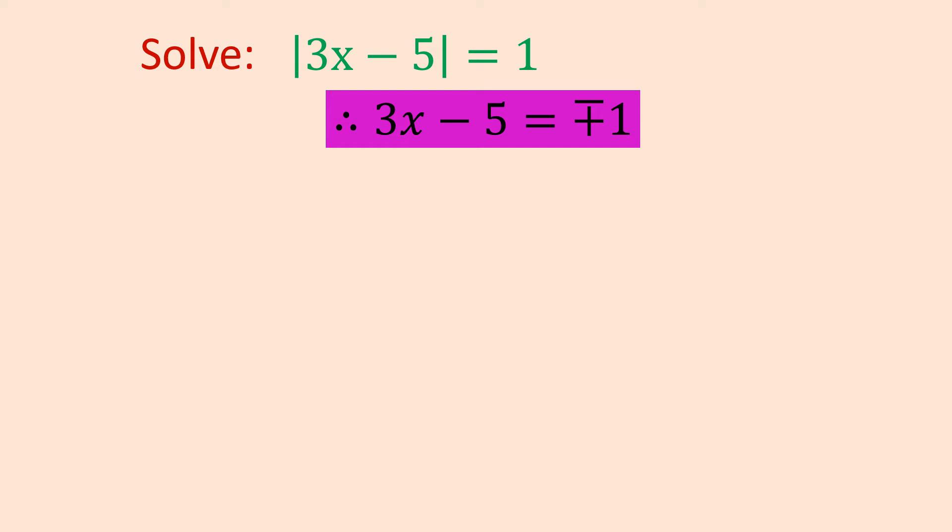As you see, modulus of 3x minus 5 equals 1, therefore 3x minus 5 equals plus and minus 1.